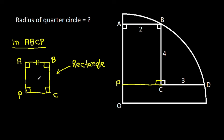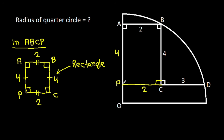Since ABCP is a rectangle, AB will be equal to PC. AB is 2, so PC is also 2. And AP will be equal to BC. BC is 4, so AP is 4. So we get AP is 4 and PC is 2, and this angle is 90 degrees.